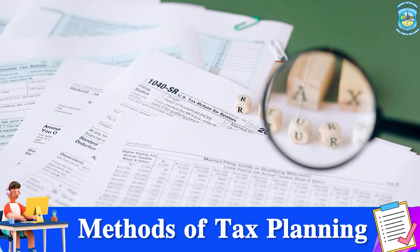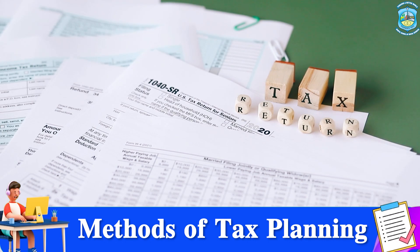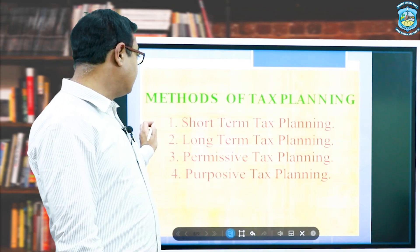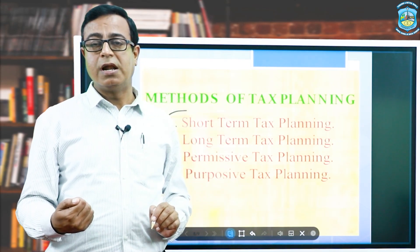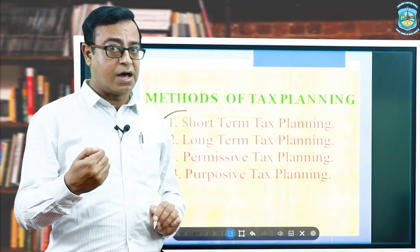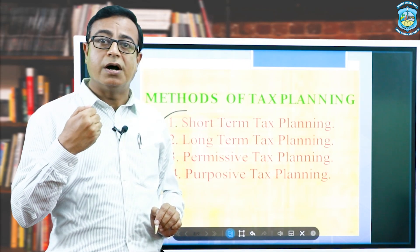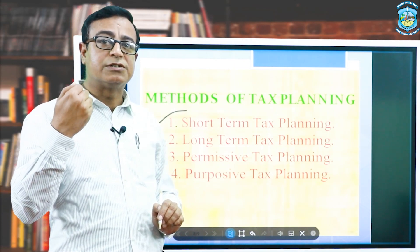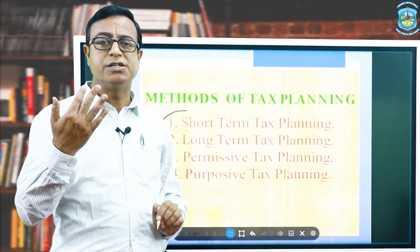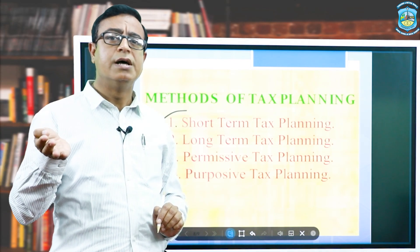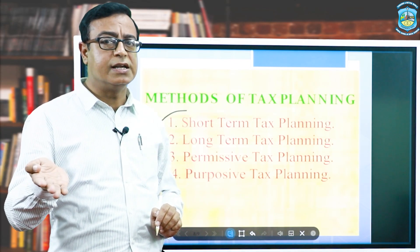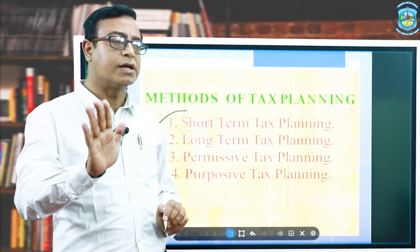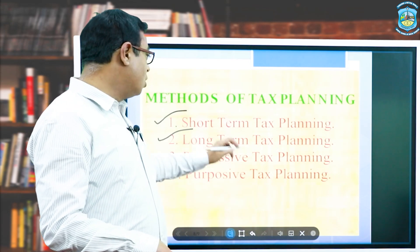Finally, we look at the methods of tax planning. There are four methods. First, short-term tax planning: when an individual starts tax planning at the end of a previous year to save tax for that year, it is short-term tax planning. It is simple because it relates only to saving tax for the current year.